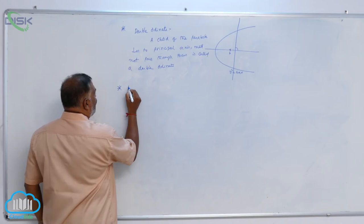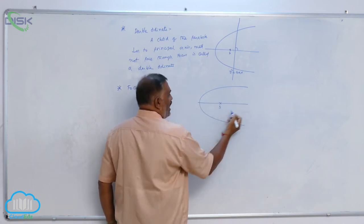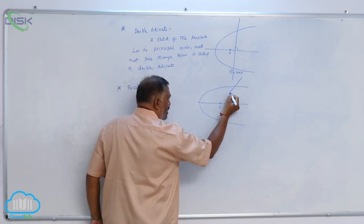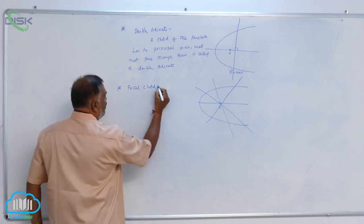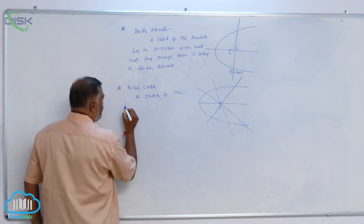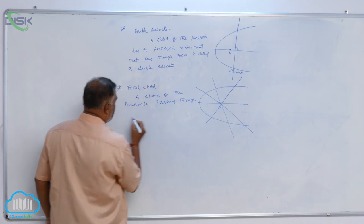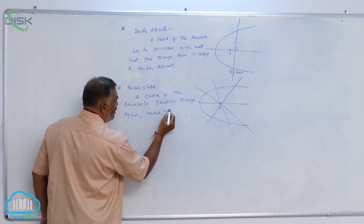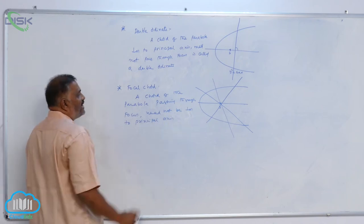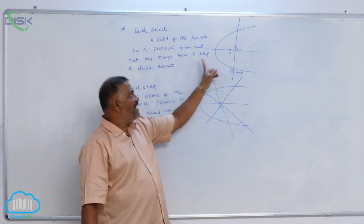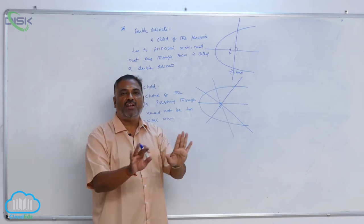Second definition: focal chord. If you consider a parabola, this is the focus and this is the principal axis. Any chord of the parabola passing through the focus is a focal chord. So a focal chord is a chord of the parabola passing through the focus, and need not be perpendicular to the principal axis. There is a clear difference: double ordinate is perpendicular to the axis but need not pass through the focus; focal chord passes through the focus but need not be perpendicular to the axis.